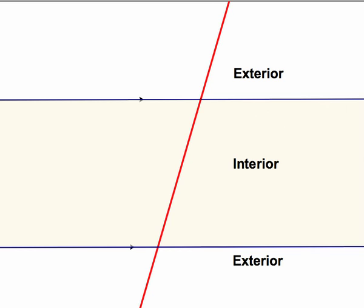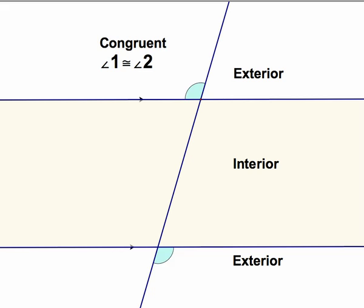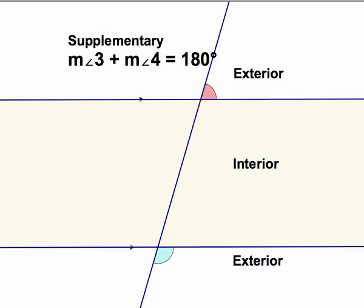A transversal crosses parallel lines to form congruent corresponding angles, congruent alternate interior angles, congruent alternate exterior angles, but same side interior and same side exterior angles are supplementary — they sum to 180 degrees.